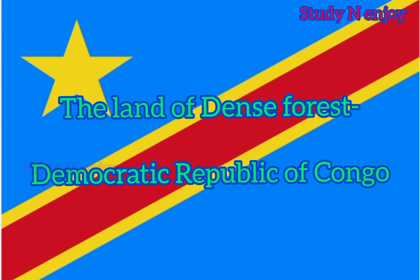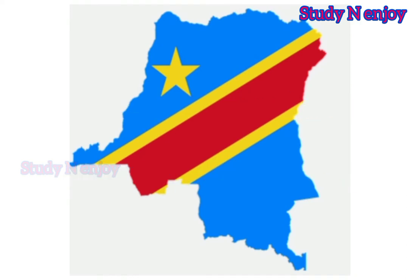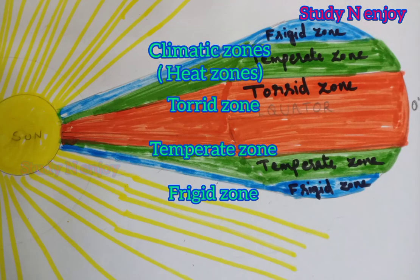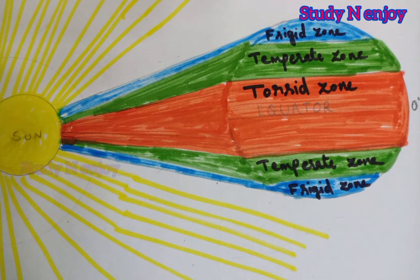Today's topic is the Democratic Republic of Congo, the land of dense forests. We have already studied the different climatic zones of the world: the torrid zone, temperate zone, and frigid zone. These zones are also known as heat zones. Each climatic zone's climate is different, and according to the climate, the lifestyle of the people also differs. Now we can look at the location and climate of the equatorial region, or torrid zone.